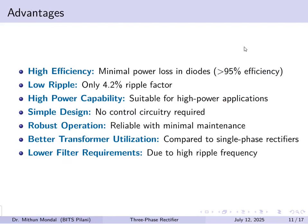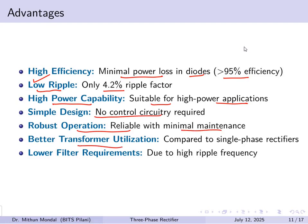The advantages of this full-wave configuration include high efficiency with minimal power loss, since efficiency is greater than 95%; low ripple of around 4.2%; high power handling capability suitable for high-power applications; simple design requiring no control circuitry; robust and reliable operation with minimal maintenance; a better transformer utilization factor compared to single-phase rectifiers; and lower filter requirements due to the high ripple frequency.